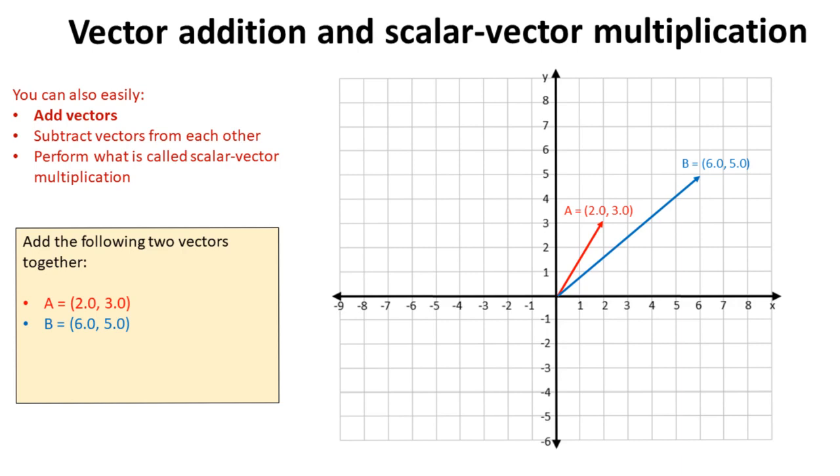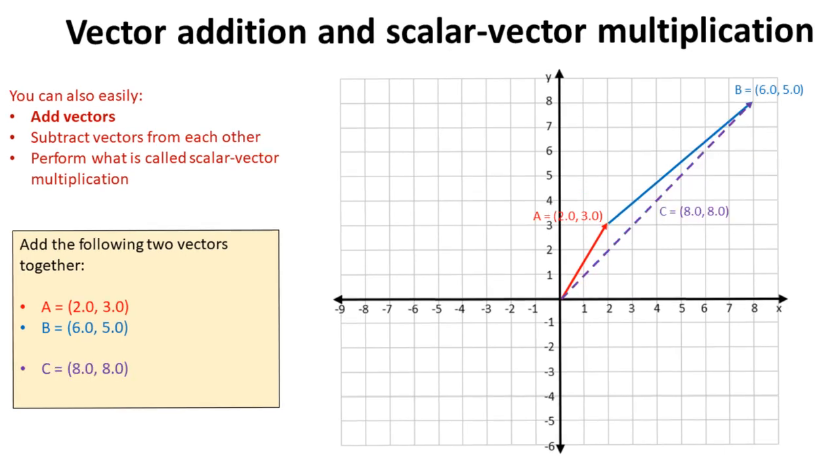Now, to add one vector to another, you simply take one of the vectors, in this case we'll take the second vector B, and move it onto the end of vector A. So that would now look like that.